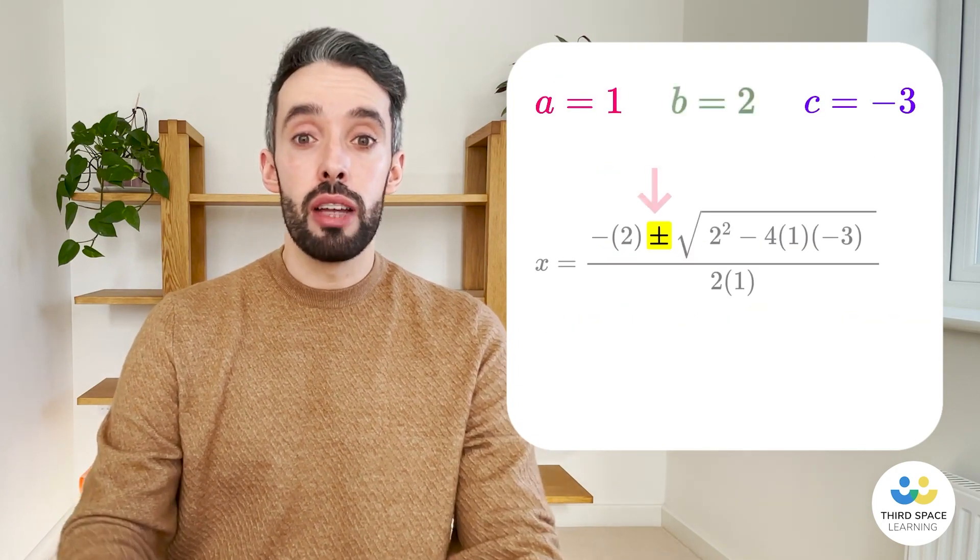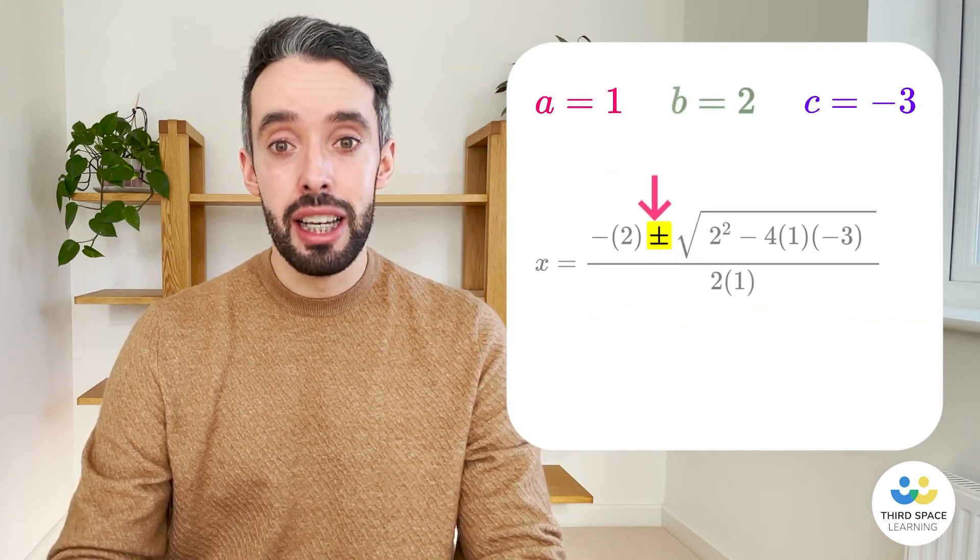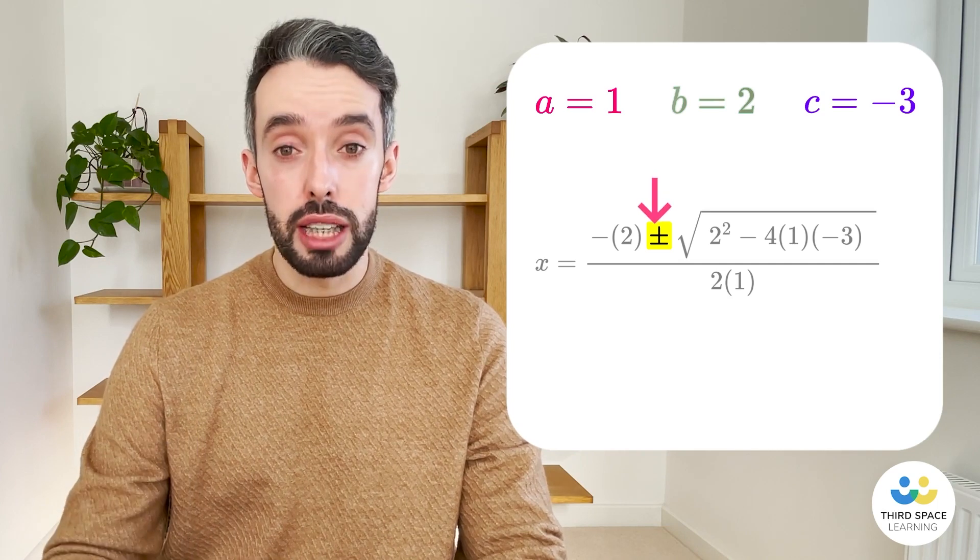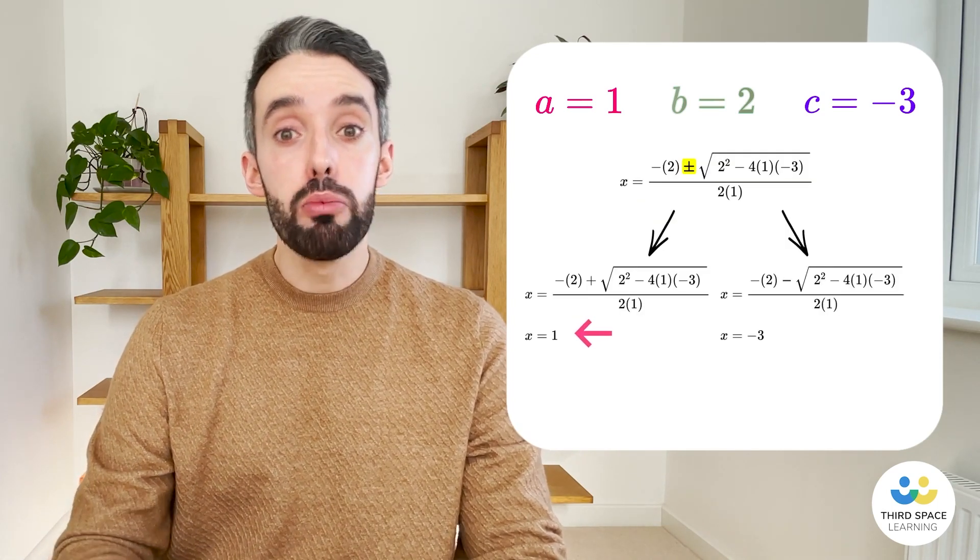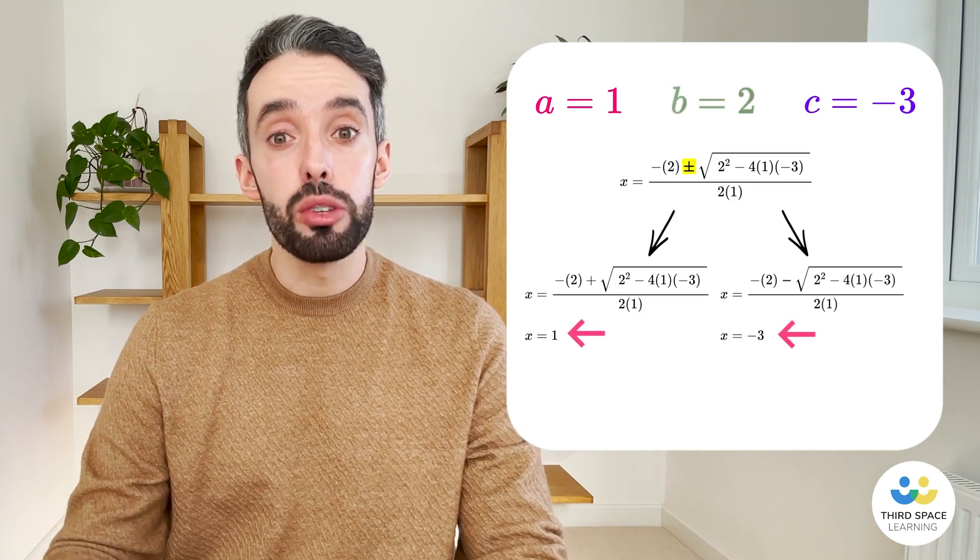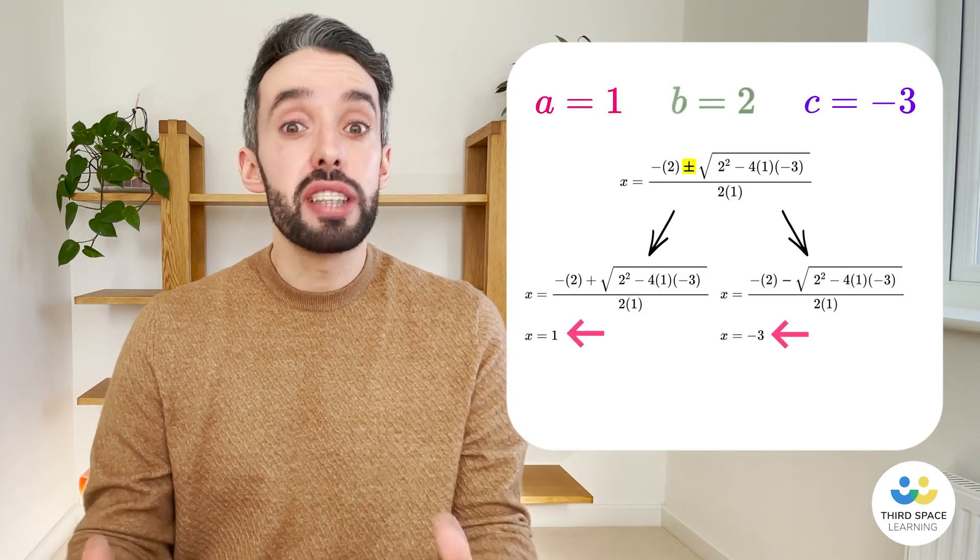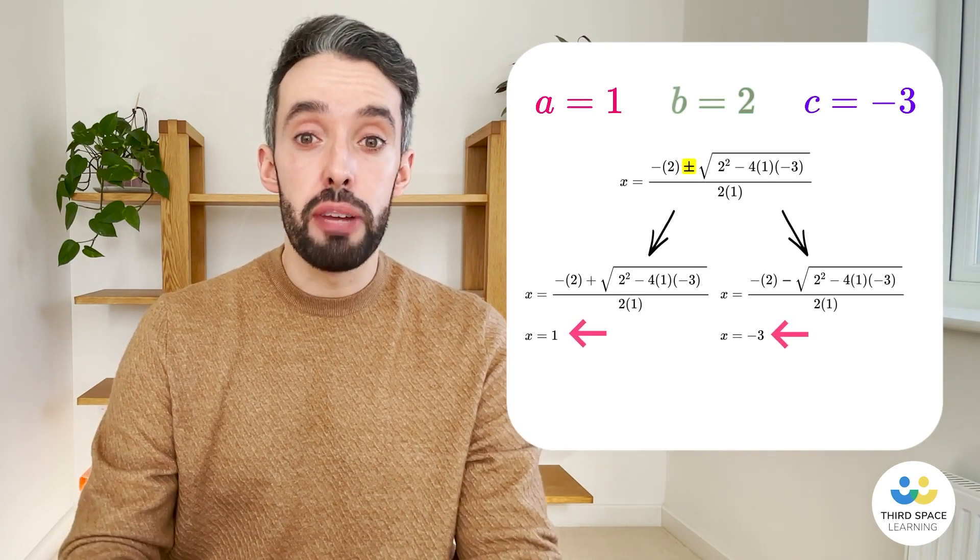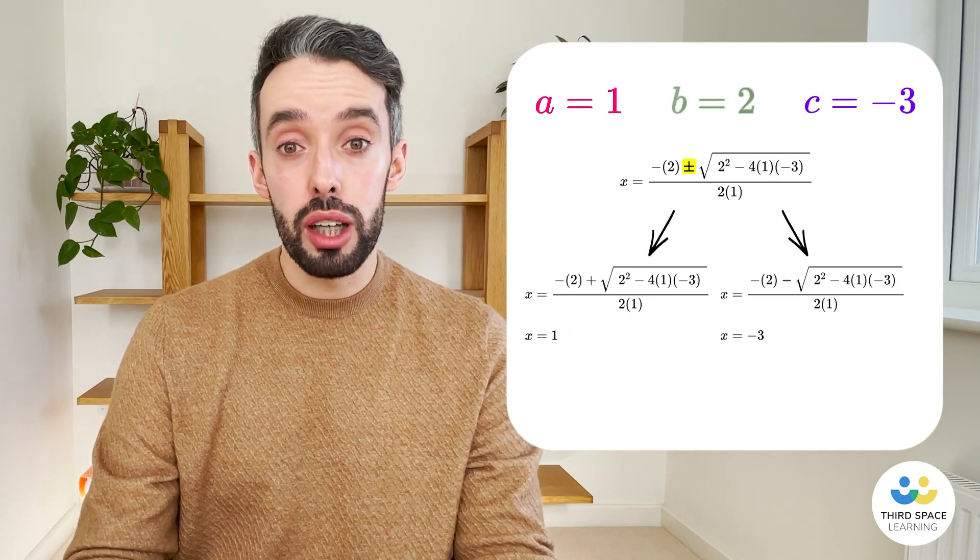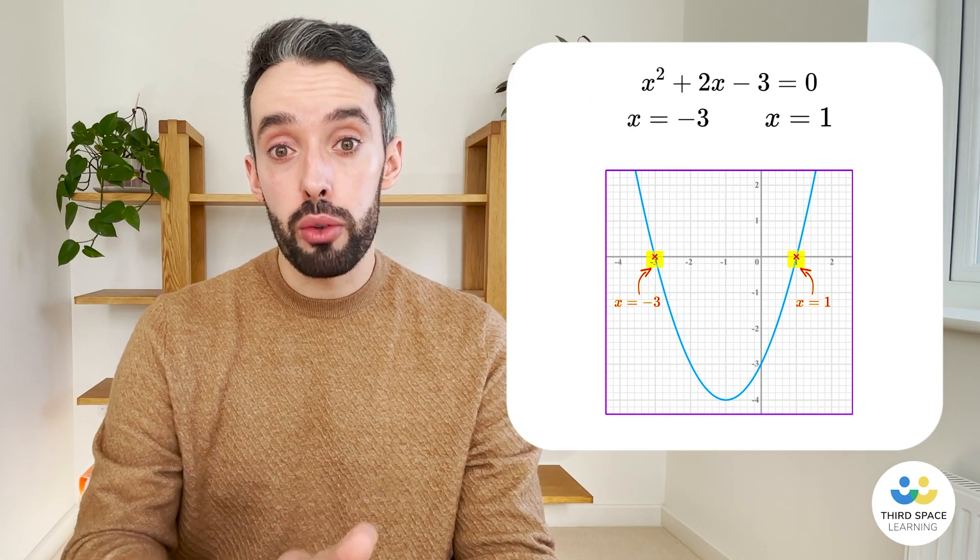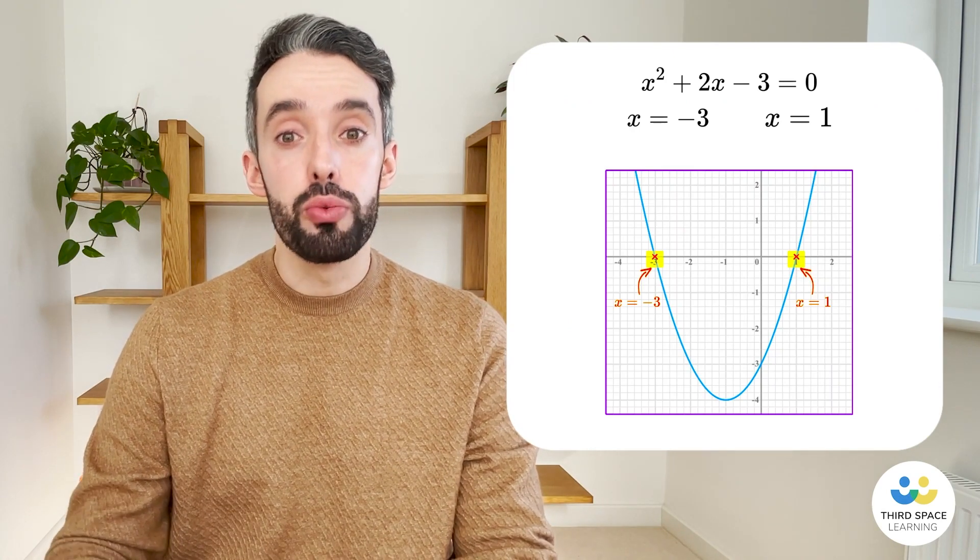Now we notice that there is a plus minus sign there. That means we have to do this twice. Once with the plus, which gives us x equals 1, and once with the minus, which gives us x equals negative 3. So we get the same solutions as we did when we solved it by factorising. Now we notice that these two solutions are where the graph crosses the x-axis. These are called the roots of the equation.